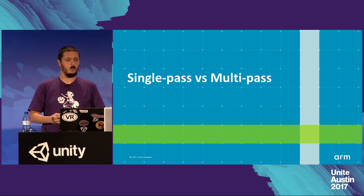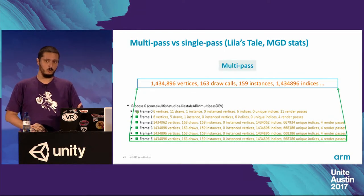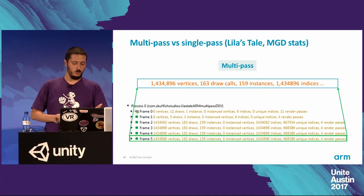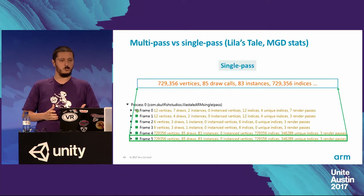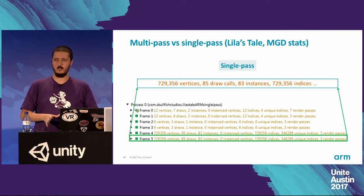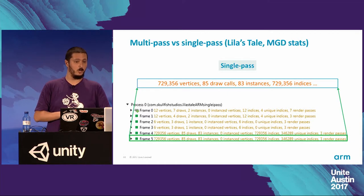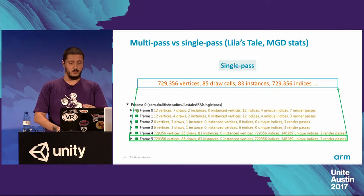I will show the difference in our game between single-pass and multi-pass rendering. On multi-pass, we had one and a half million vertices and about 150 draw calls. With single pass, this is almost halved. This is why you should use single-pass rendering in your game — it's really, really helping us keep performance stable.